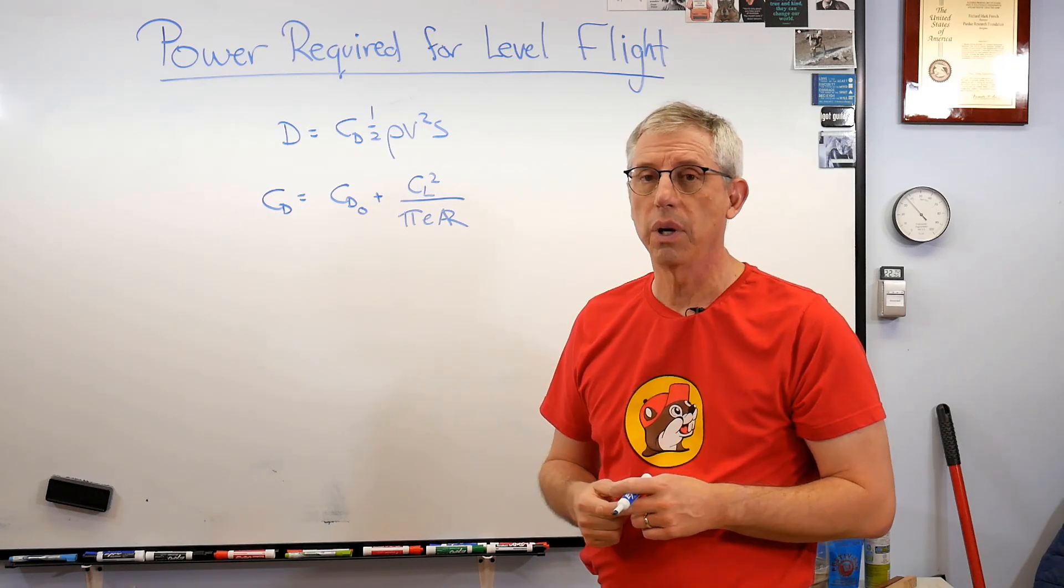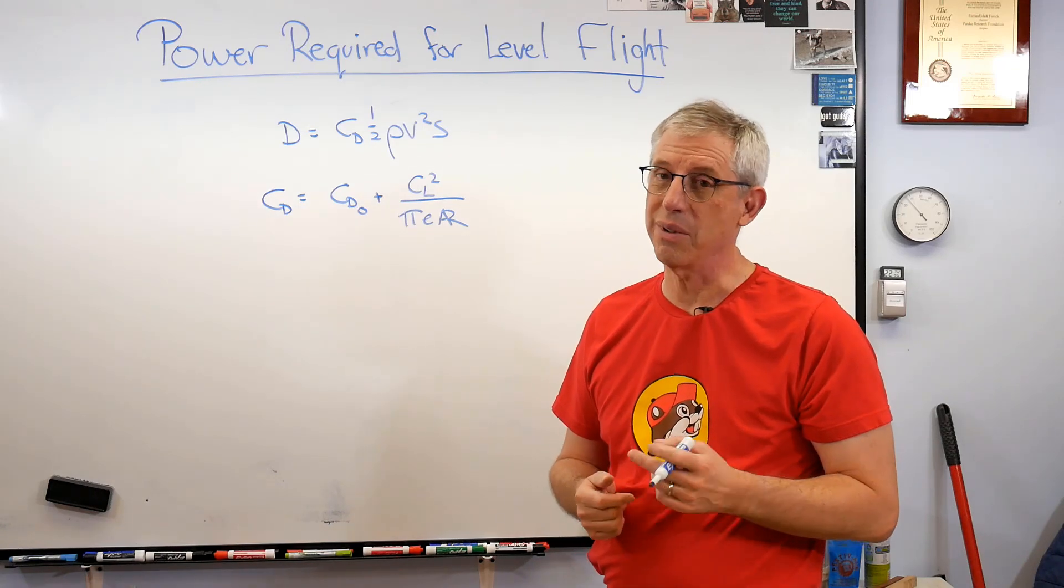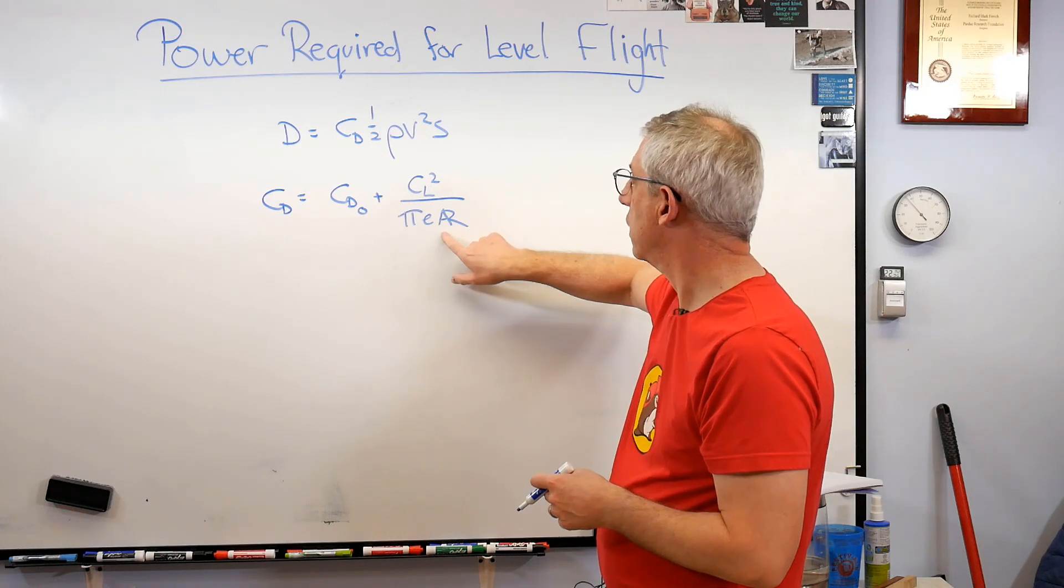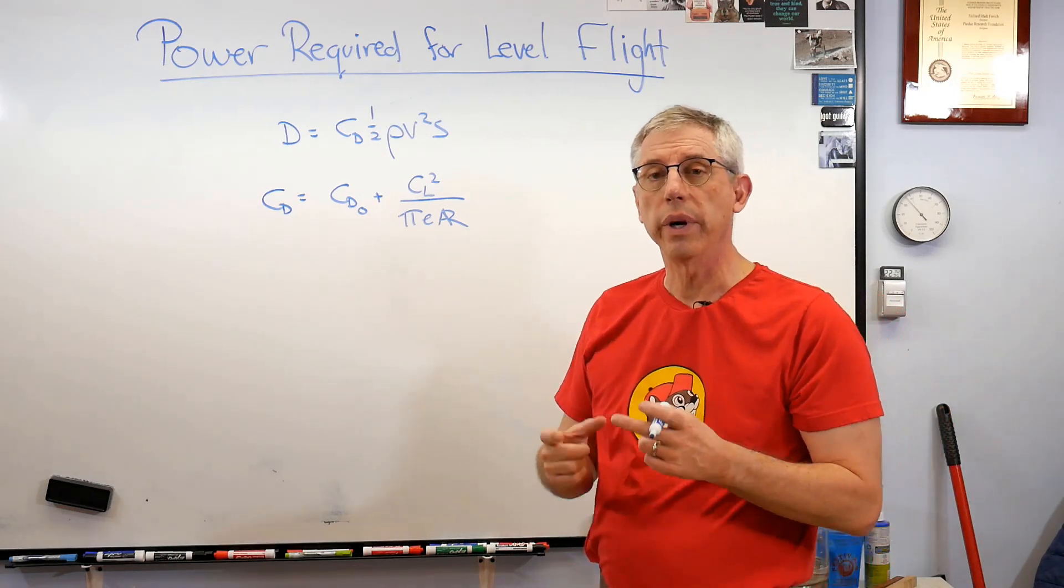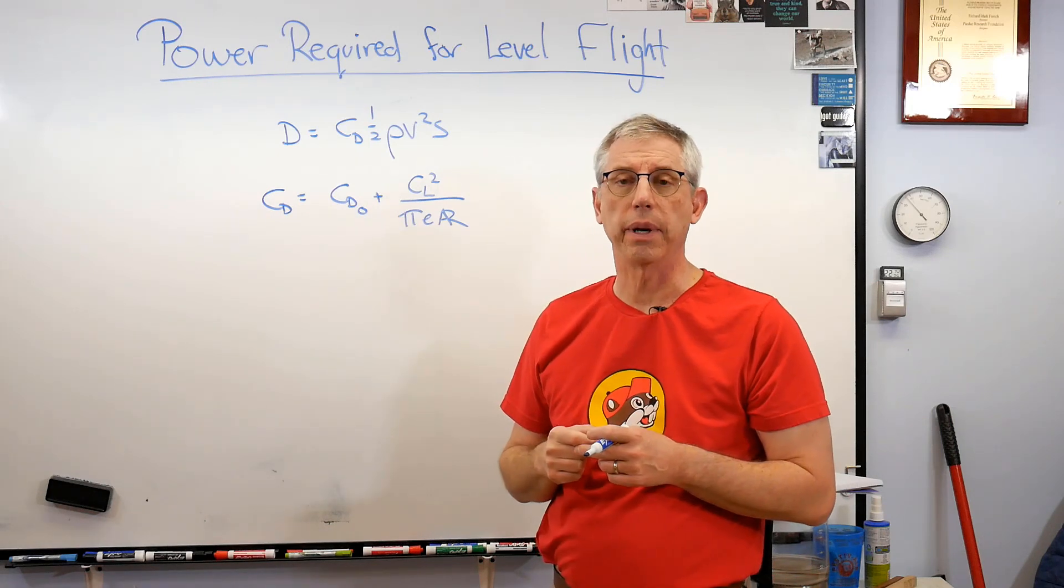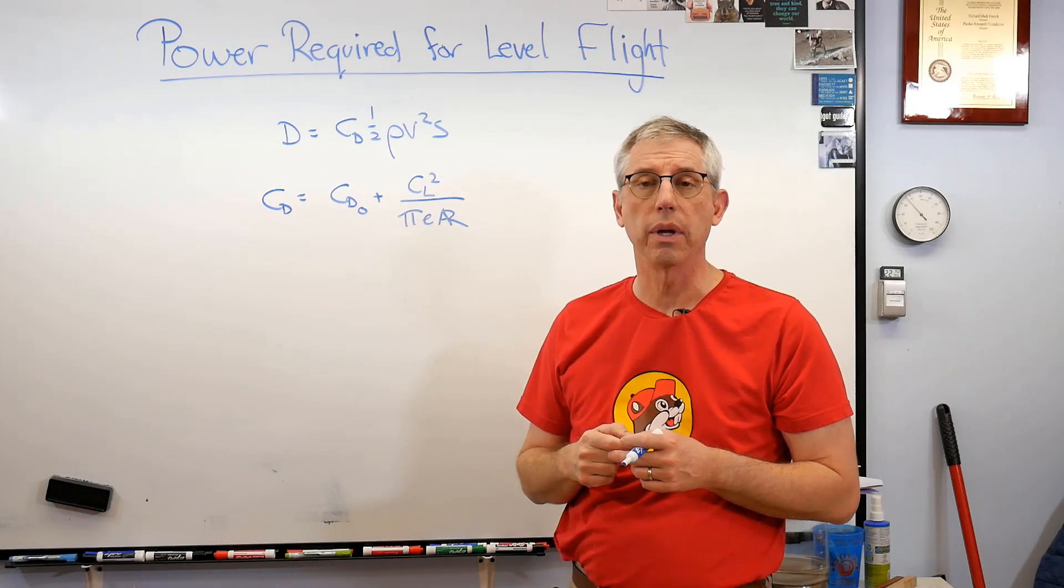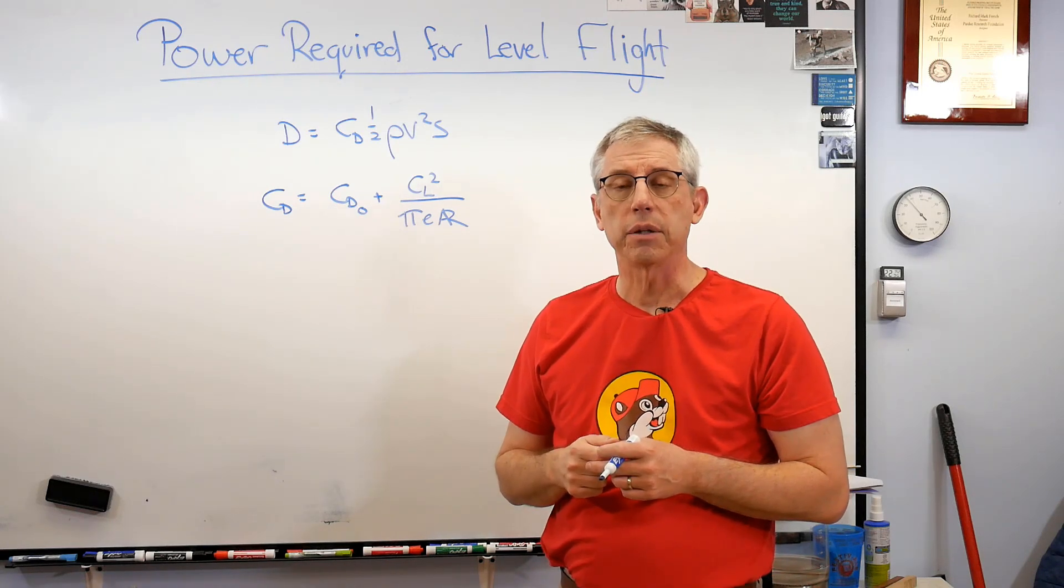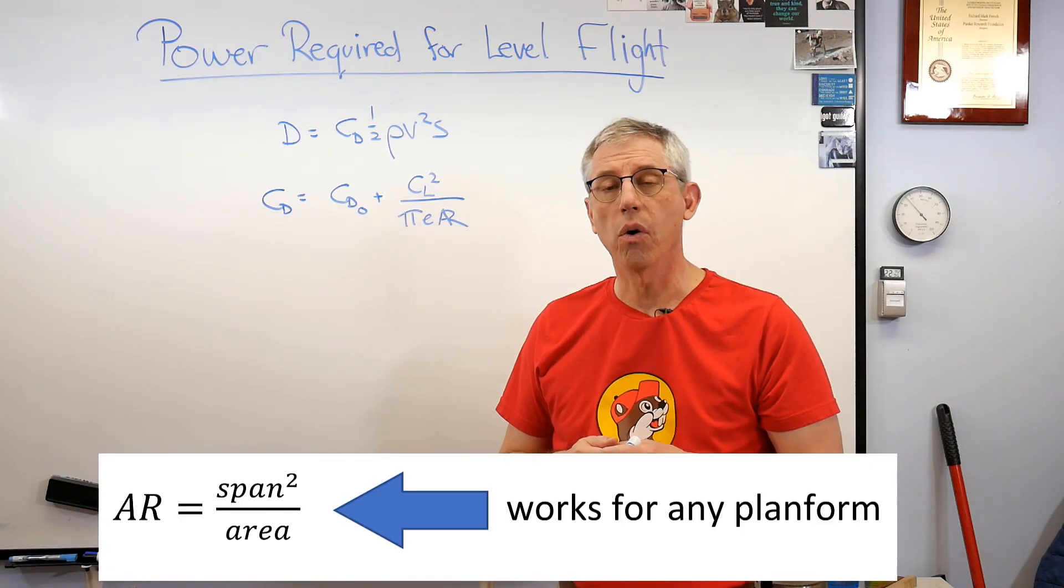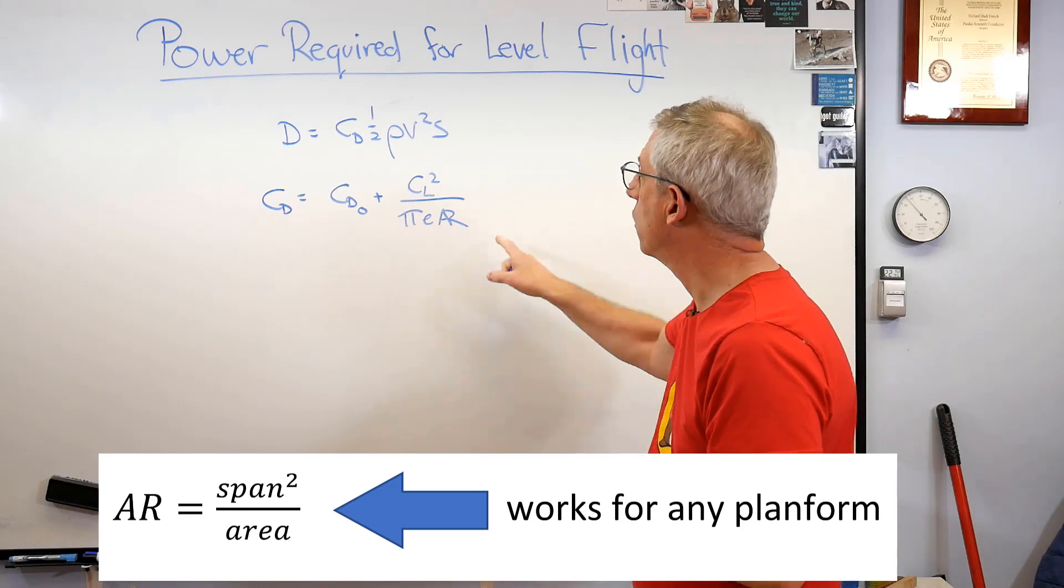And since the leading and trailing edge are both curved there's no straight lines anywhere on that wing, so they're hard to build. And this little stylized AR here is aspect ratio. Now if the wings just rectangular, aspect ratio is span divided by cord. If it's not rectangular like that one over there, aspect ratio is span squared over area.